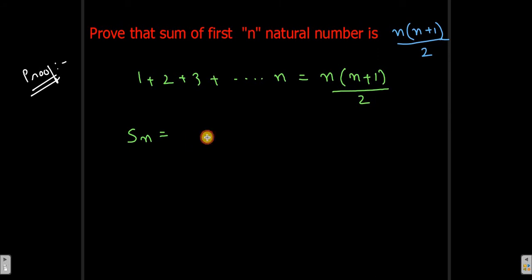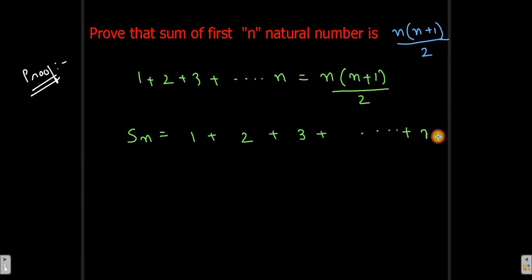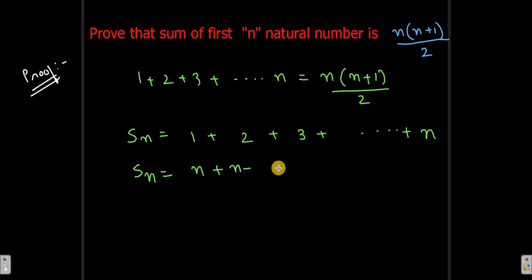To prove this, let's take S_n = 1 + 2 + 3 up till n. And we will write this S_n once again below, but in reverse order — that is n, then n minus 1, then n minus 2, and so on up till 1.